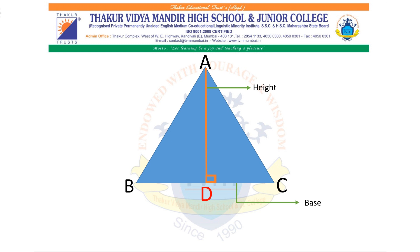Any triangle, since it has 3 sides, also has 3 heights. So if I take side AC as the base, the height will be drawn from vertex B — that is BF. For triangle ABC, if AB is the base, the height will be CE. Any triangle has 3 heights from 3 vertices to its 3 corresponding bases.